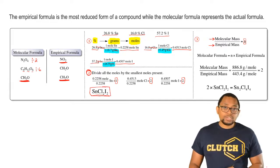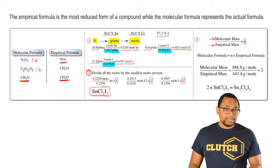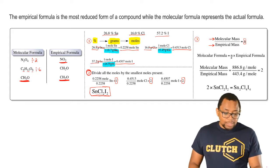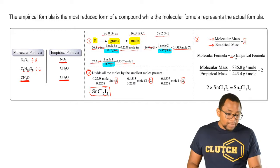This is your empirical formula, so you would find the mass of all those elements together. Once we've found that, we use that n value and multiply it by the empirical formula to give us our molecular formula.